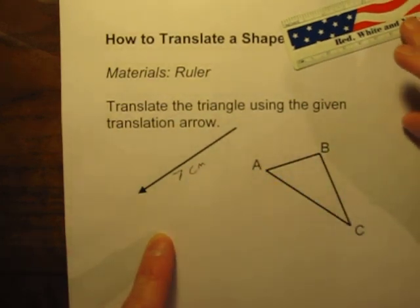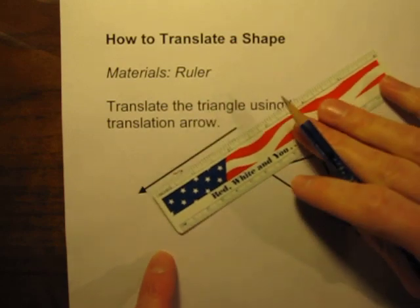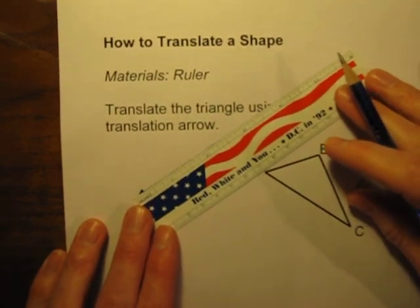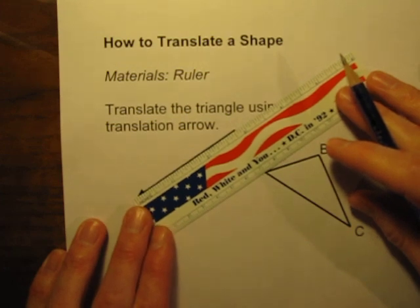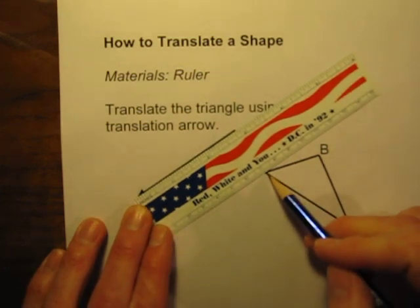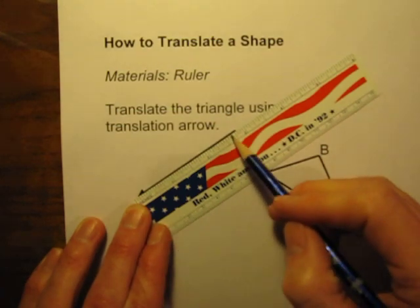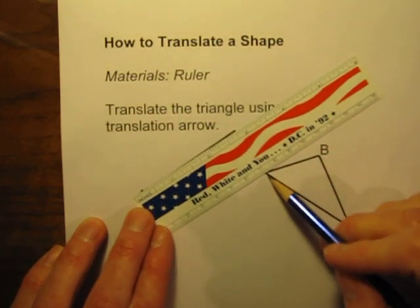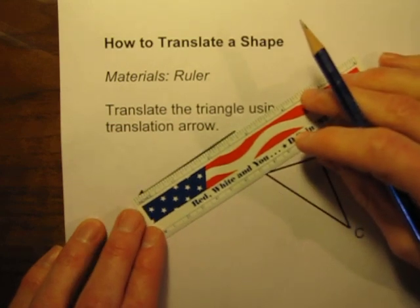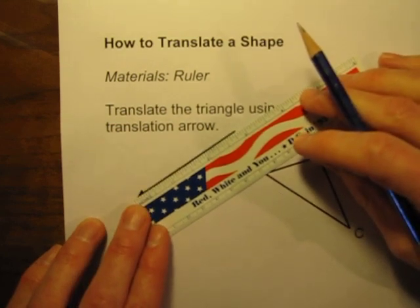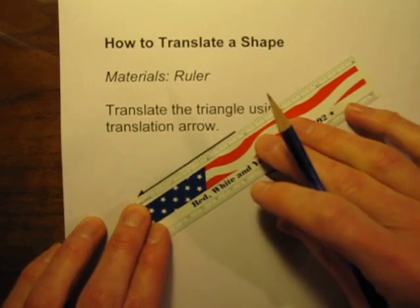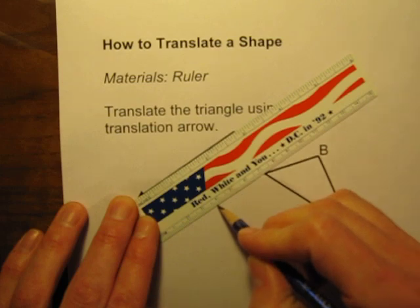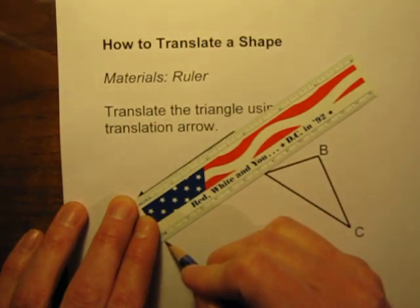But let's just try to eyeball it. So I'm going to start at point A, and I want to move this point seven centimeters so it is as close to parallel to this line as possible. So I'm going to put seven centimeters right on point A. I'm going to line up the ruler with the arrow, and that actually works out pretty well.